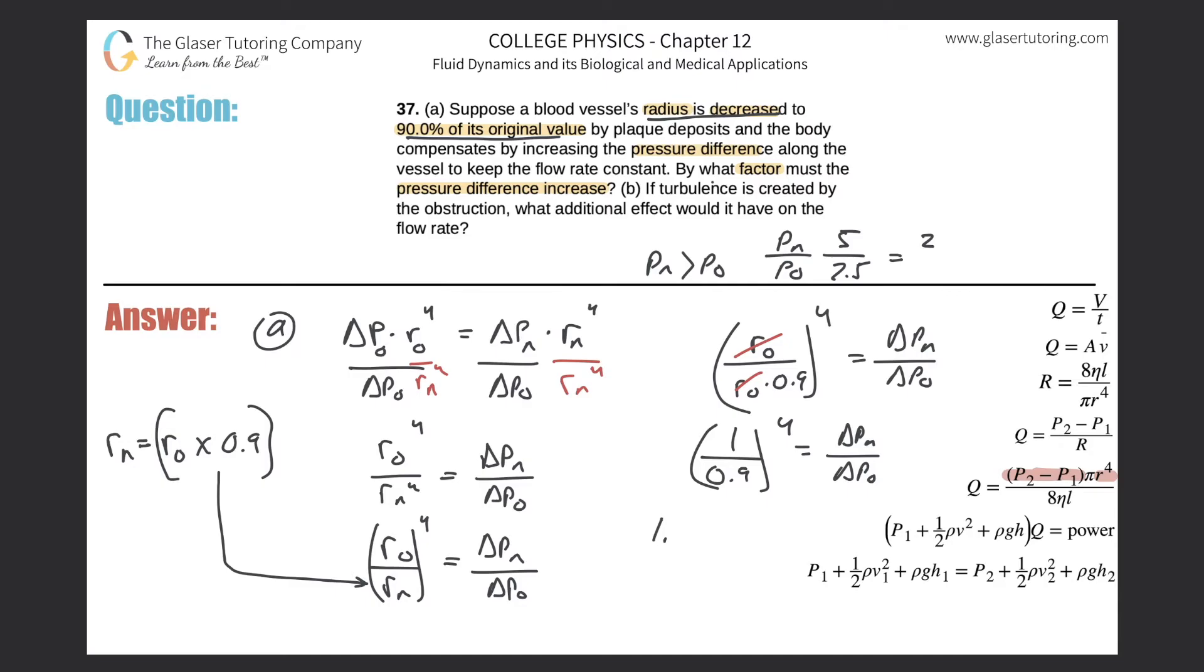1.52 will equal delta P_n over delta P_o. You can put this over one if you like. What is this telling us? This is telling us that whatever the original pressure was, the new pressure has to be 1.52 times that original pressure value. So if the old pressure was 100, then the new pressure will be 152.